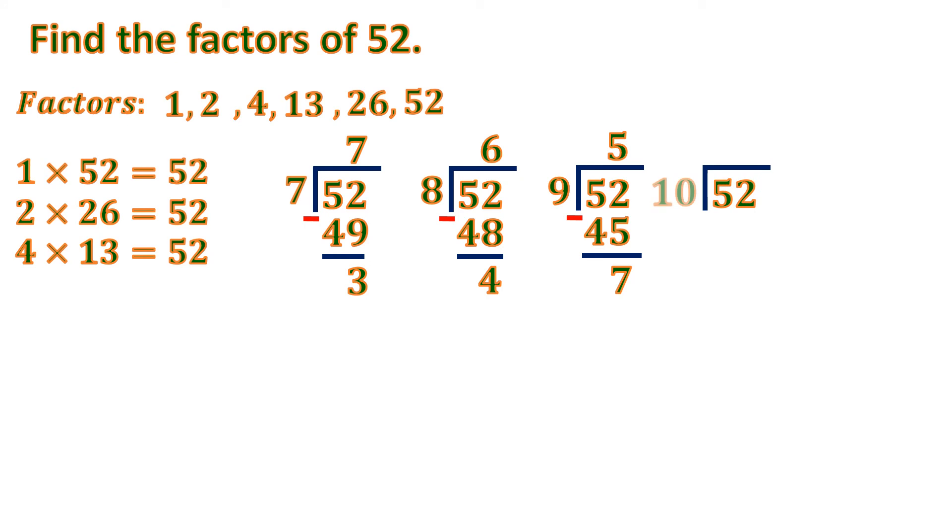Then let's continue. 52 divided by 10 will be 5, because 5 times 10 is 50. So subtract. The difference is 2. So the remainder is 2. That means 10 is not a factor of 52.